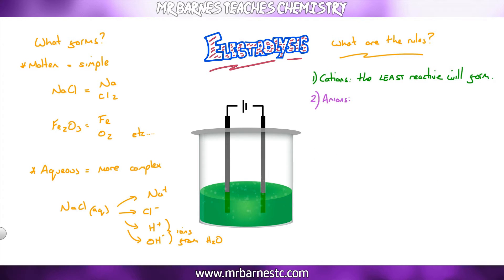If we move on to the anions, nice and simply, have you got a halide? If so, that will form. A halide being a halogen. For example, sodium chloride, I've got chlorine, that chlorine is a halide. Therefore, chlorine will go from Cl- to Cl2, again remembering it's diatomic. The OH- stays in the solution.